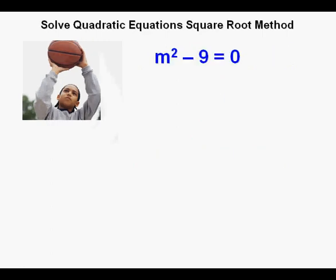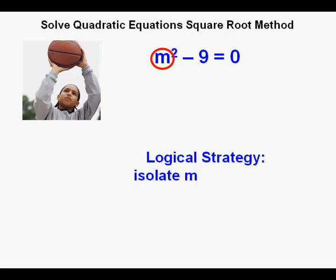The first equation we'll look at today is m squared minus 9 equals zero. The logical process of solving using the square root method is the same for solving linear equations, and that is to perform operations to isolate the unknown to get it by itself. In this case, we are going to isolate the unknown m.